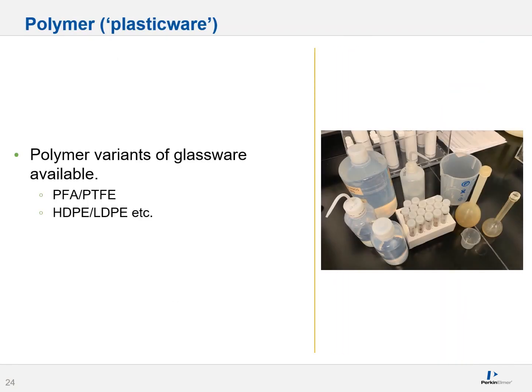You will also encounter polymer-based measurement and storage devices. These are often called plasticware as a catch-all term, but be careful — they can be made of material that is not plastic, such as PFE or PTFE. They can also be acquired in plastic formats such as high-density or low-density polyethylene (HDPE and LDPE) and other types of plastics. Their use depends upon your analytical needs — plasticware is better suited for certain applications such as metals analysis, but less suited for chemical analysis when dealing with organic solvents.